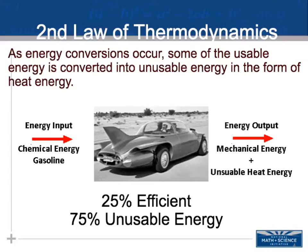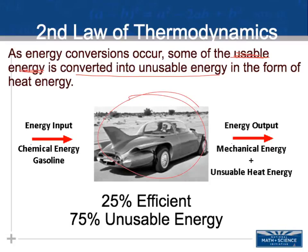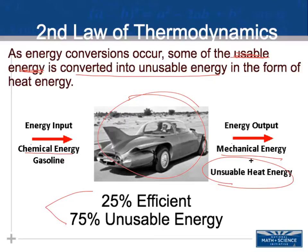Our second law of thermodynamics describes how, during energy transformation, some energy is lost as heat. Remember entropy — the increase in disorder. As energy conversions occur, some usable energy is converted into unusable energy, usually heat energy. Looking at this car engine, the chemical energy of gasoline transforms into mechanical energy, but 75% of it is lost as unusable heat energy. Heat energy can only do work if there is a heat gradient.